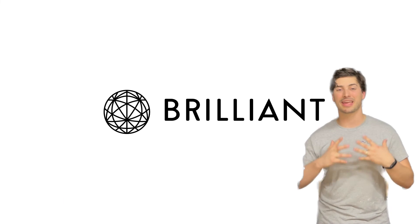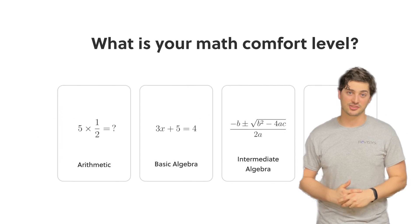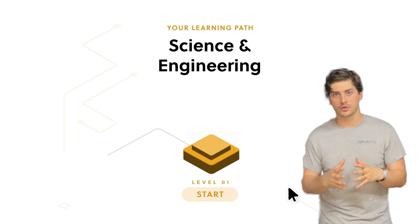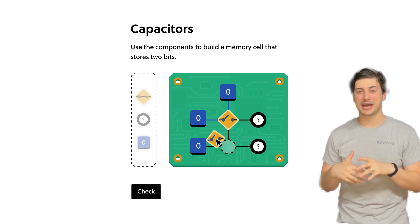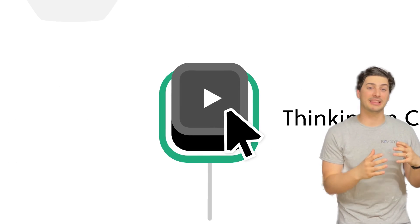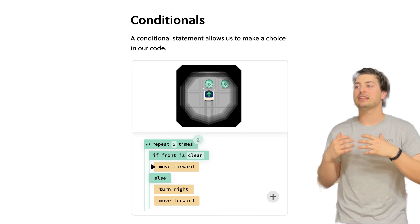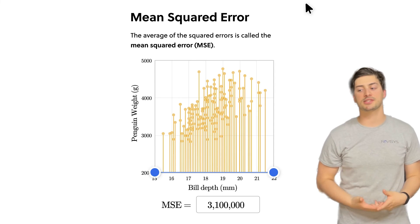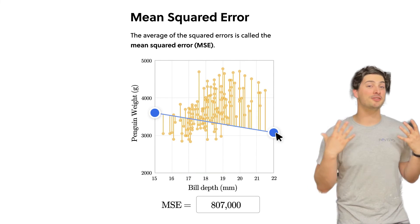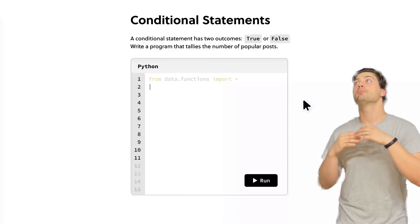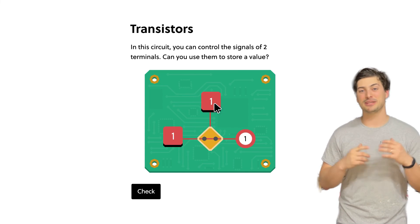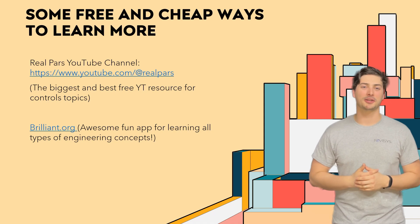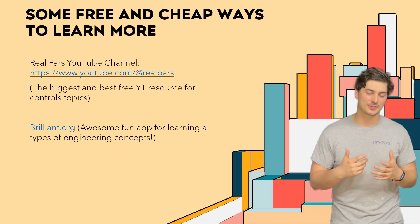Secondly, I want to recommend Brilliant.org. This one isn't just for controls and automation engineers — it's a really fun and enjoyable app that helps you learn about all fields of engineering, sciences, and math. I personally downloaded and subscribed to Brilliant right before my last round of interviews and career change, and it helped me so much in getting ready for the interviewing process. Because being an automation and controls engineer requires a broad understanding of many fields of engineering, Brilliant is the perfect partner to sponsor this crash course. Be sure to check out the RealPars YouTube channel and Brilliant.org linked below this video.